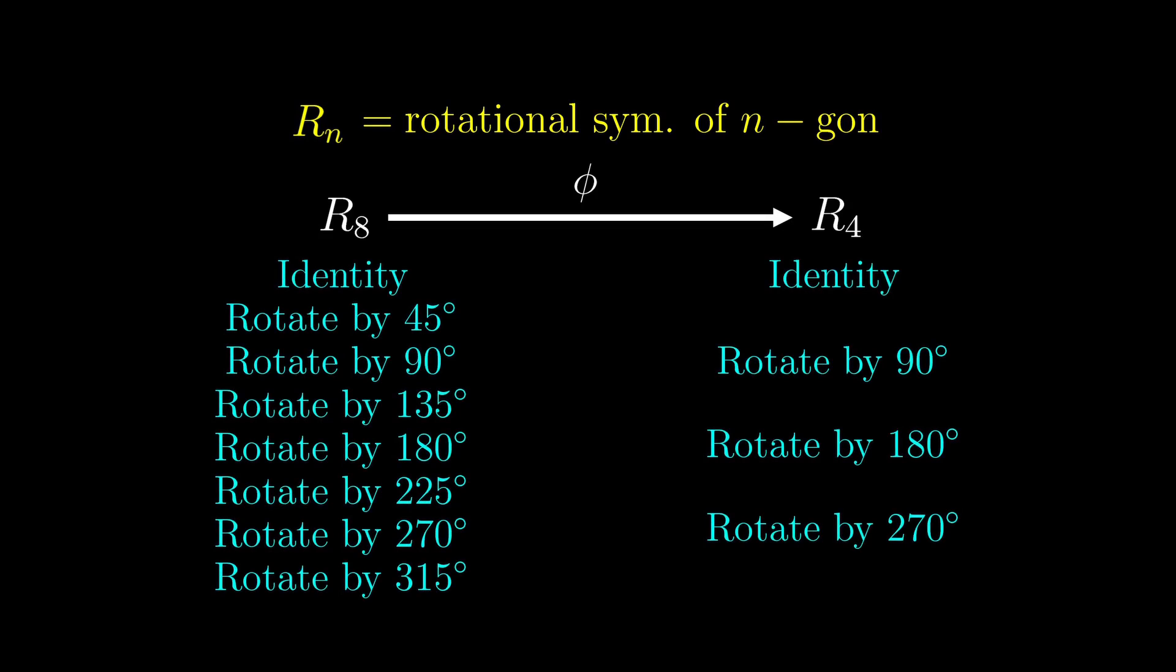Now we are going to see an example of a kind of unexpected homomorphism, first by denoting Rn as the group of rotational symmetries of a regular n-gon, generalizing the case when n equals 12 that we discussed. It turns out that we can actually construct a homomorphism from R8 to R4, which is pretty unexpected considering that they have different numbers of symmetries. Let's list all the symmetries in each group. The function maps the symmetries like what's shown here.